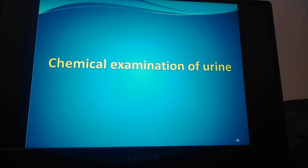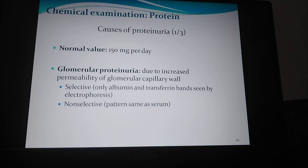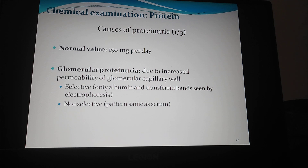First of all we will discuss about protein. Normally kidneys excrete a scant amount of protein in urine up to 150 mg per 24 hours. Proteinuria refers to protein excretion in urine greater than 150 mg per 24 hours in adults. Causes of proteinuria are glomerular proteinuria, tubular proteinuria, overflow proteinuria, hemodynamic proteinuria, and post-renal proteinuria.